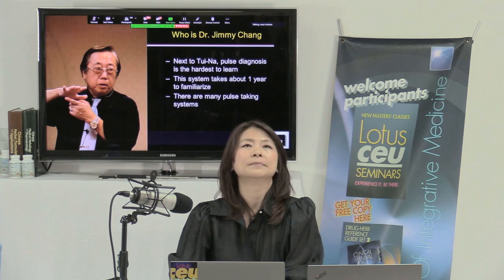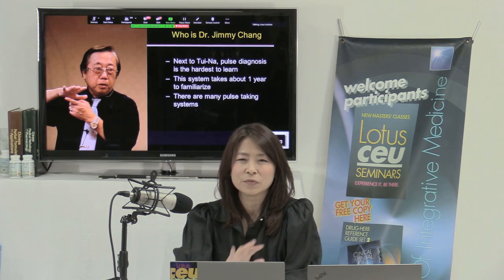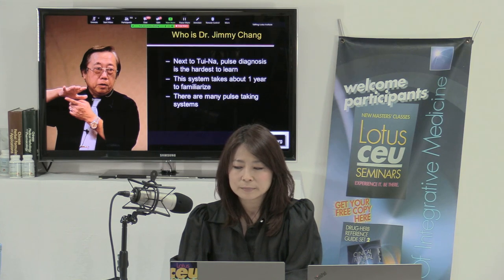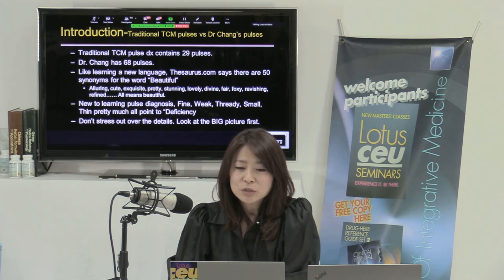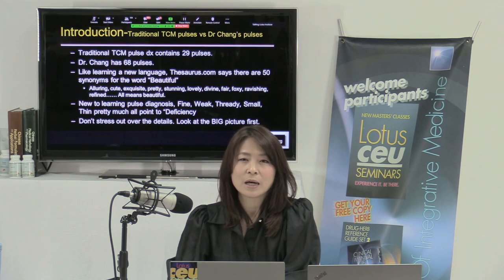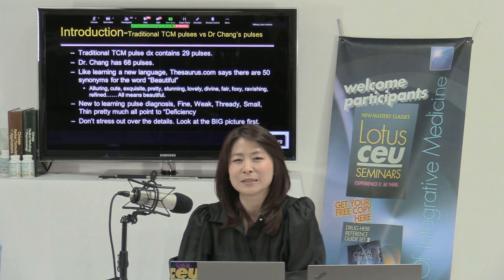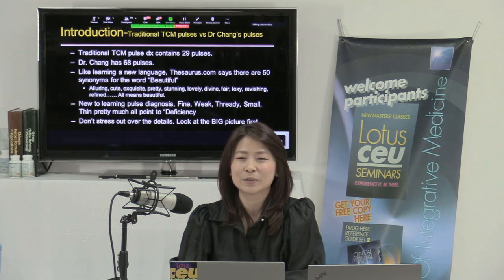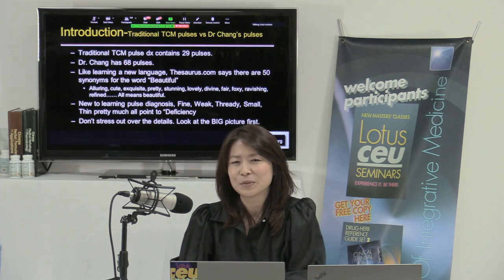There are many different pulse-taking systems. I studied with a teacher in Taiwan who uses the seasonal school of pulse diagnosis — very different from this one. I think learning one system at a time is best to avoid confusion. Traditional TCM has 29 pulses, but Dr. Chang has 68 — which sounds like a lot. It's similar to the first time you encountered Master Tong's points: a totally new system.